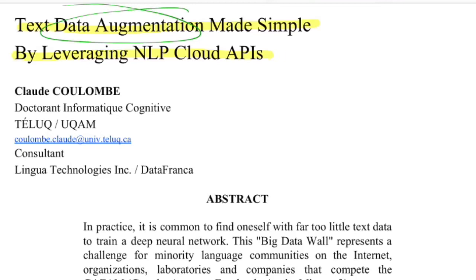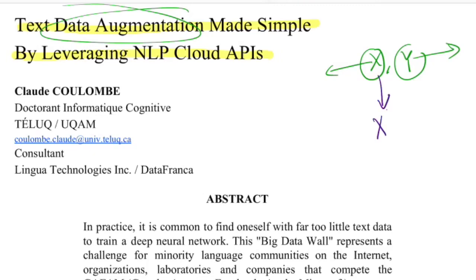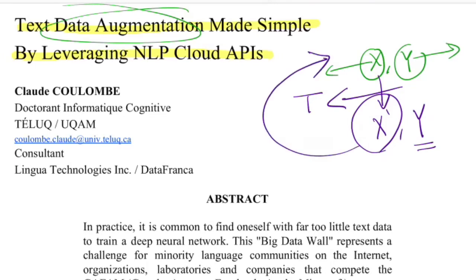Data augmentation is a very common technique in the vision domain and people have started to pick it up in the NLP domain as well. If you have data (x, y) where x is a sentence and y is its corresponding label — say x is a movie review and y is the sentiment — we transform x to create x-bar while still preserving label y.